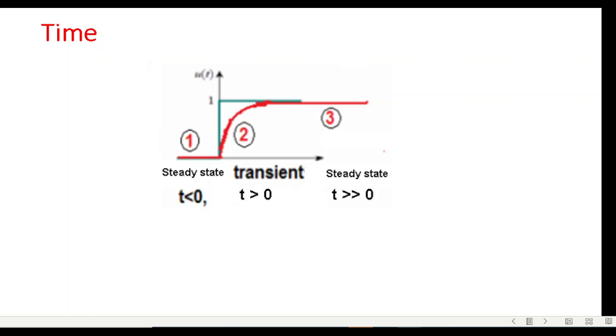Anything before that would be called t less than 0, and in this portion generally the circuit is in steady state condition. Then immediately after 0 we have a transient period, which you can call t=0+ or t greater than 0. This is the transient period where the capacitor is charging or discharging.